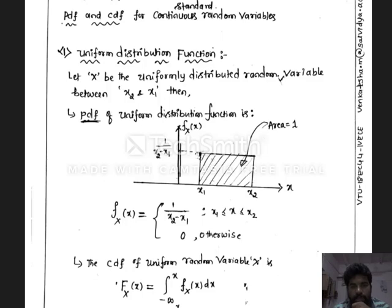Welcome to SAVI YouTube channel, Sai Vidya Institute of Technology. In this lecture video I am going to explain some of the standard random variables and numerical problems on Module 1 in Engineering Statistics and Linear Algebra: single random variables. Let us discuss some of the standard random variables one by one. The first standard random variable is the uniform random variable.